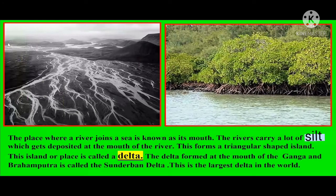There are two important terms to be discussed: mouth of a river and a delta. The place where a river joins a sea is known as its mouth. The rivers carry a lot of silt, which gets deposited at the mouth of the river and forms a triangular-shaped island. This island or place is called a delta. The delta formed at the mouth of the Ganga and Brahmaputra rivers is called the Sundarbans delta. This is the largest delta in the world.